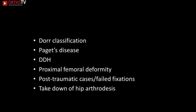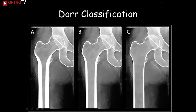Dorr B is probably the commonest femoral type. Beware of Dorr A and Dorr C femurs. In Dorr A, you are likely to get a diaphyseal fit and undersize the stem, leading to thigh pain. The solution is to ream the femur and broach it, ensuring a diaphyseal-metaphyseal fit rather than just diaphyseal. In Dorr C, the cortices are really thin — consider using a cemented prosthesis rather than a large oversized uncemented prosthesis.